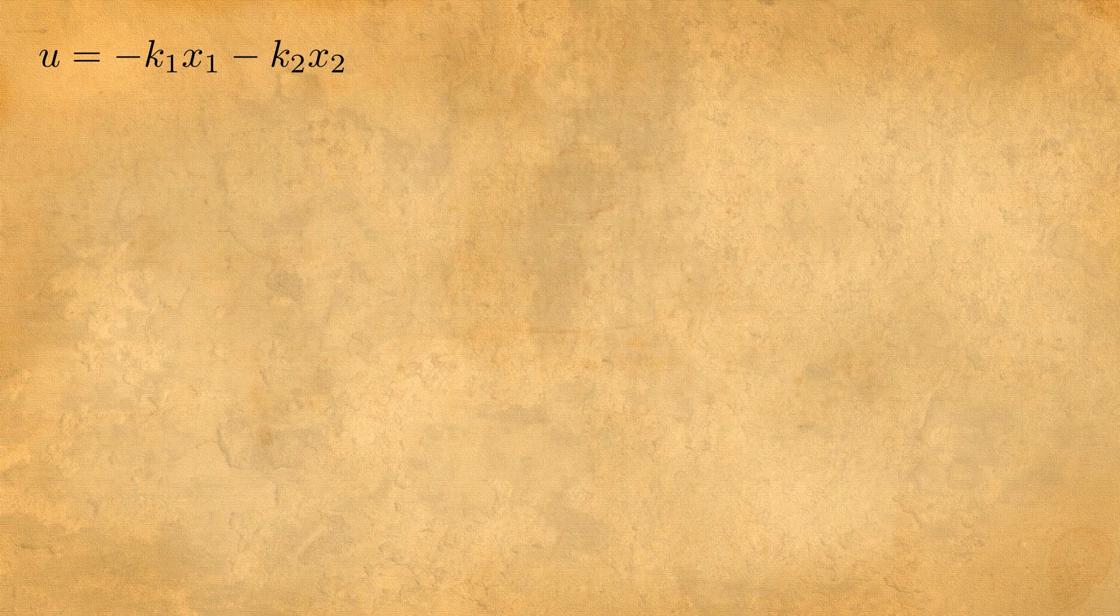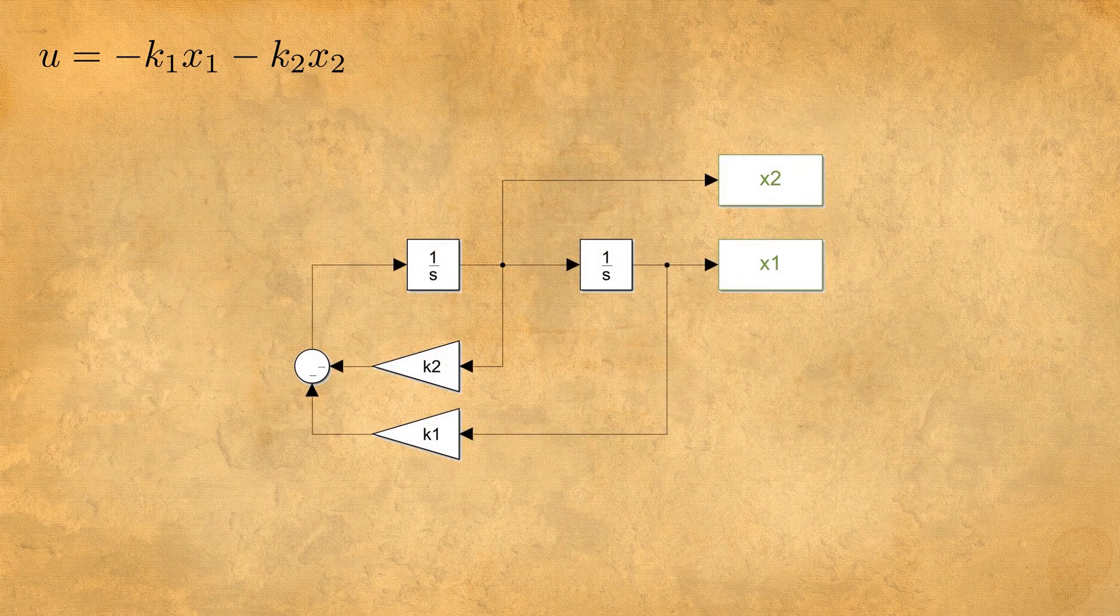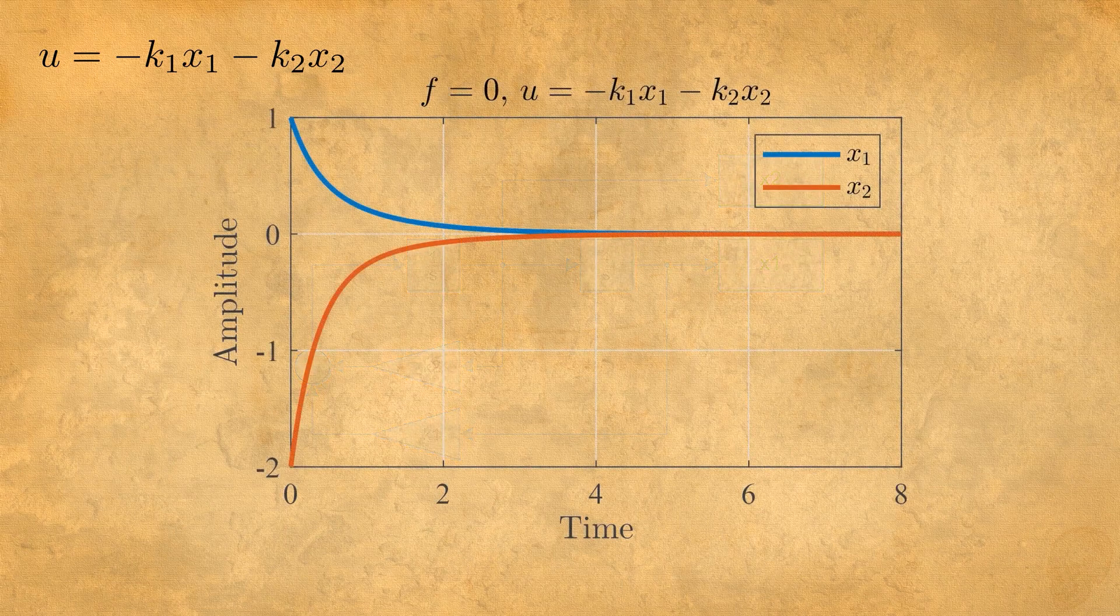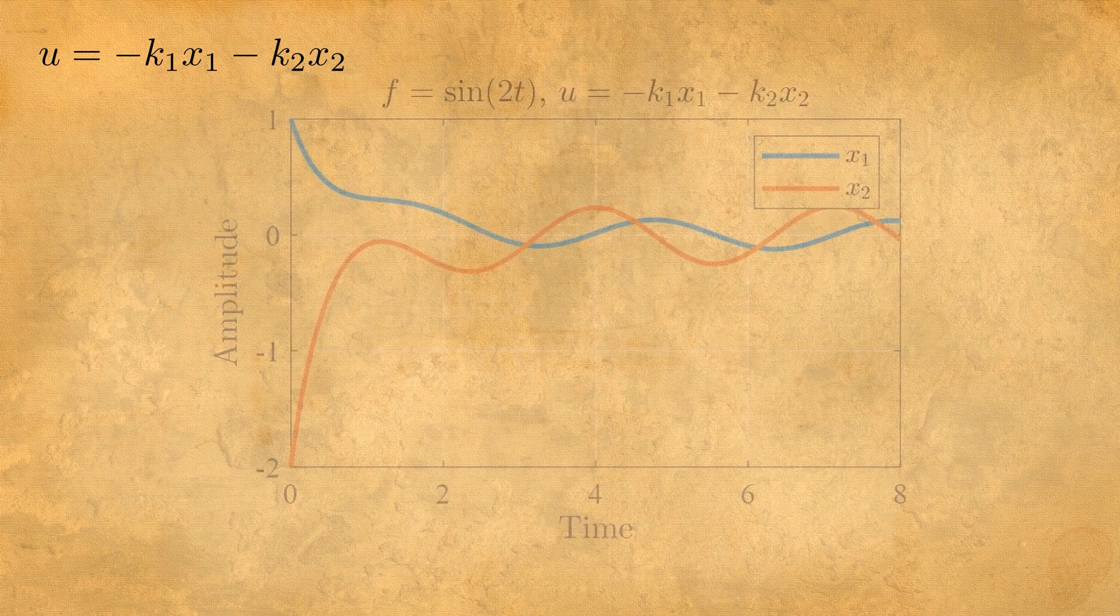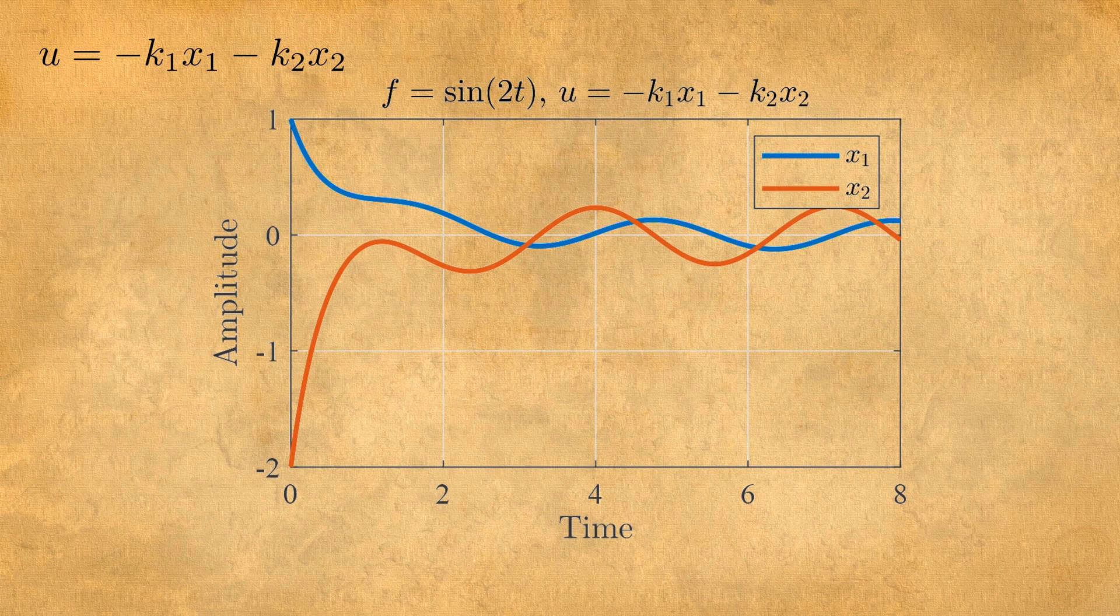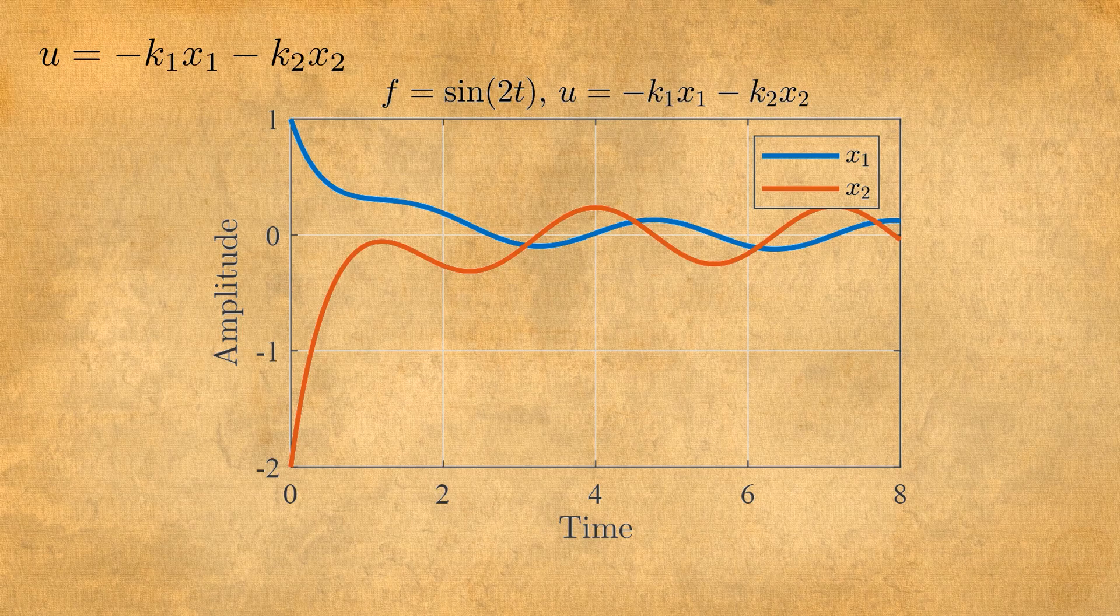A simple one is minus k1 x1 minus k2 x2 where k1 and k2 are positive and in Simulink it's how it looks. As we see the response of both states is zero so that's good, that's what we want. However when we put disturbances like sine 2t this controller doesn't work anymore.